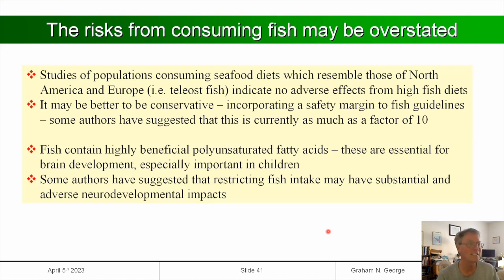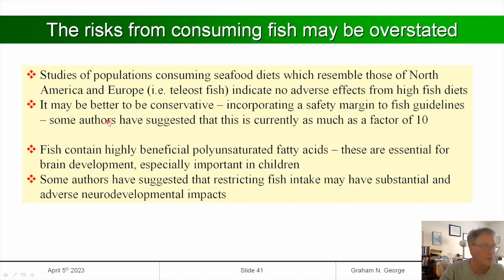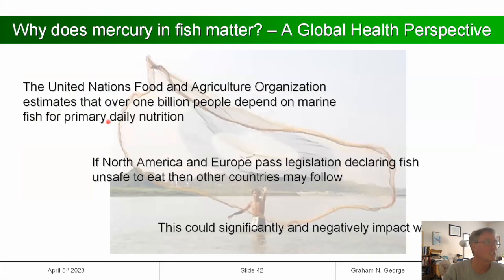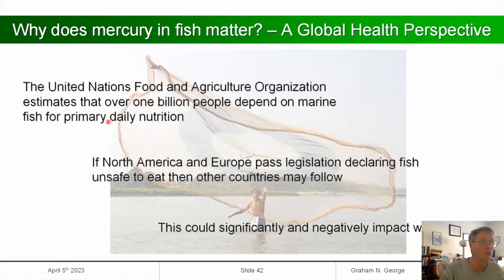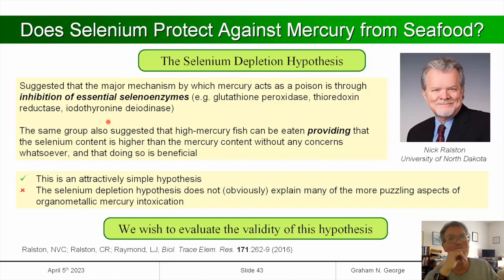From a global health perspective, nearly two billion people depend on marine fish as their primary protein source. If legislation says fish are bad, that will eventually trickle down to other countries and could impact world health. There has been a suggestion that you can eat fish very high in mercury provided the selenium is high enough — but the bottom line is you cannot make that assumption.